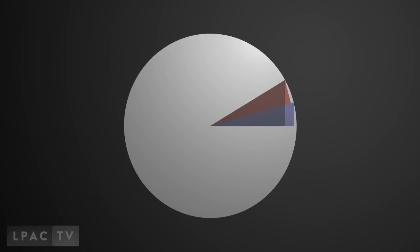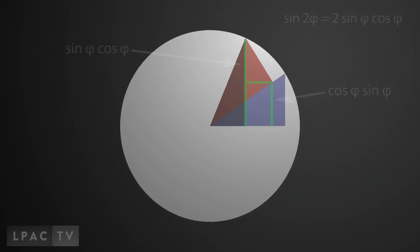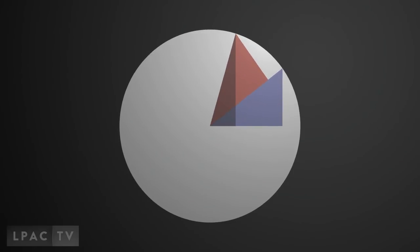Interestingly, while the sine cannot be calculated in terms of the arc, it is possible to say exactly how the sine would change if the angle were doubled. There are expressible internal relationships in the domain of the circular functions, even though the functions themselves are transcendental.